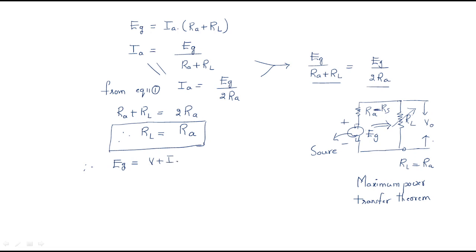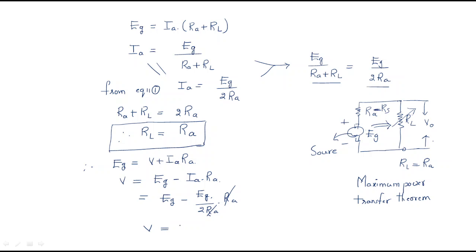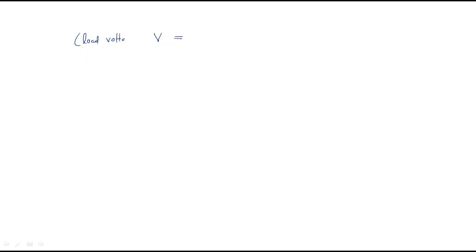From EG equals V plus IA·RA, we get V equals EG minus IA·RA. We know that IA equals EG by 2RA, so substituting: V equals EG minus (EG/2RA)·RA. Both RA cancel, giving EG minus EG/2, so the load voltage V equals EG by 2.